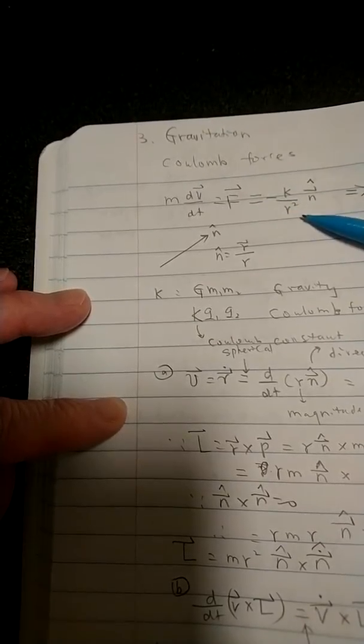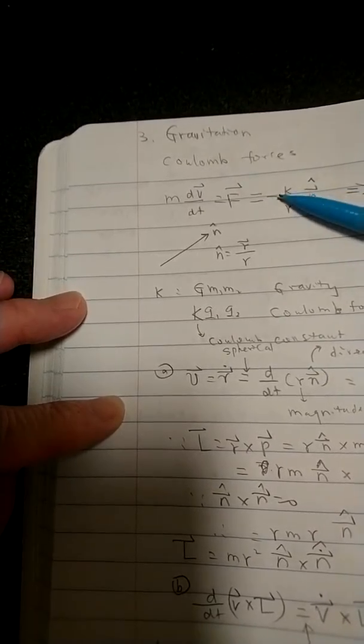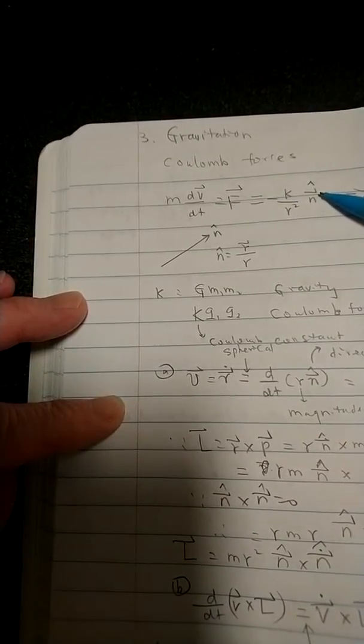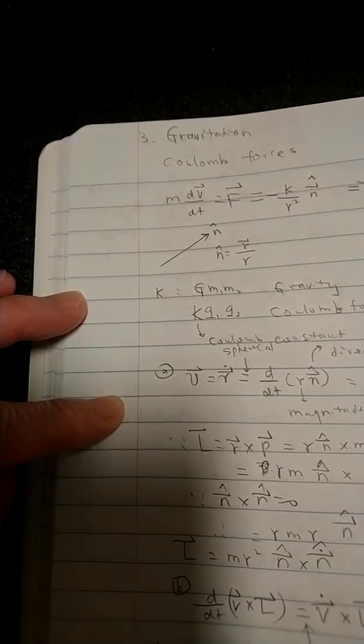And whenever you have a Coulomb or gravitational force, you always have 1 over r squared. The force direction will be the negative of the radial direction, which we call n hat, like that.